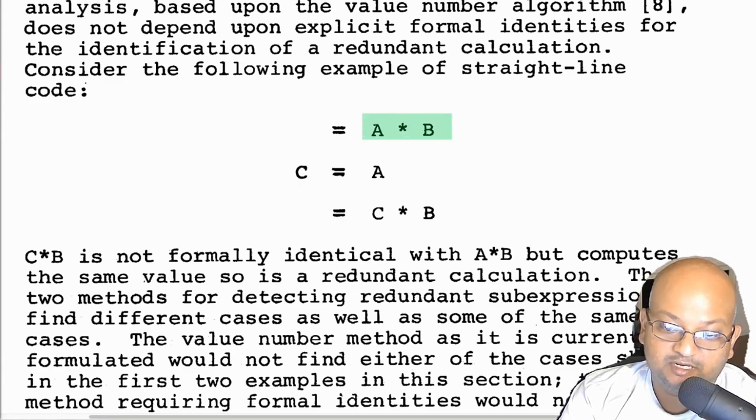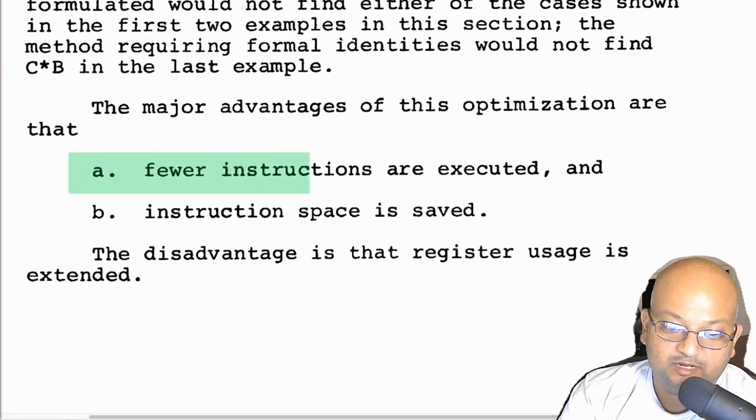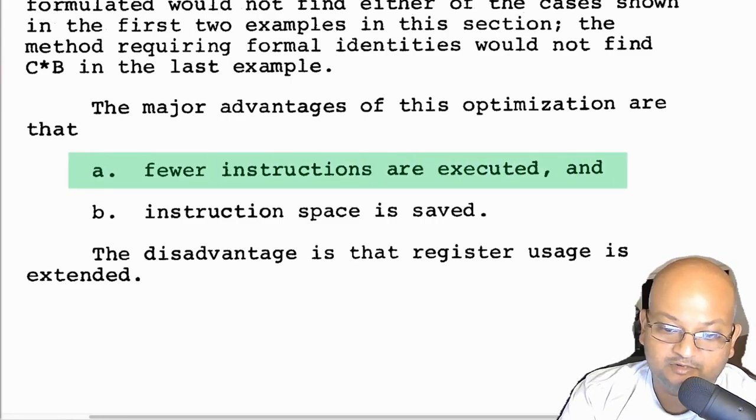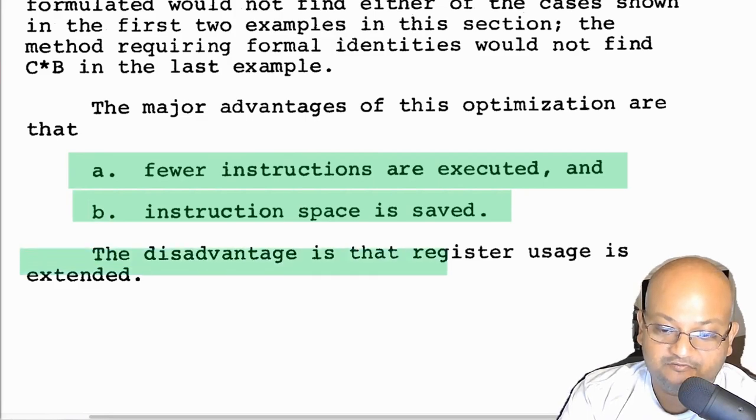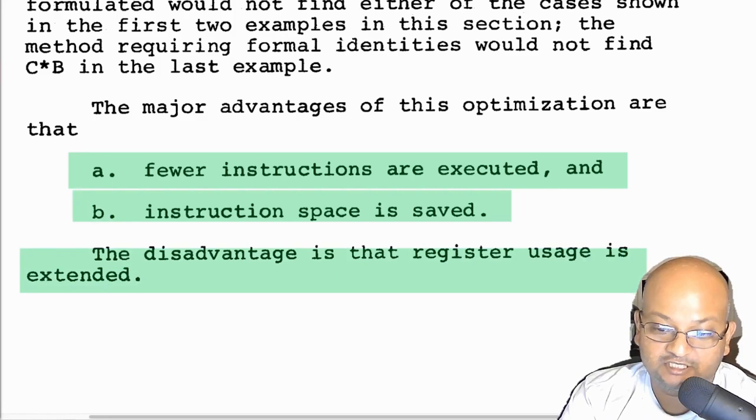You can also do a stronger form of subexpression elimination in which you propagate equivalent values. For example, we're computing A into B over here, and now that we're assigning C to be equal to A, this next expression is redundant as well. So of course, this is a net win because you're executing fewer instructions and not performing redundant calculations. You're also saving on code size. The only disadvantage of doing it is that you're increasing pressure on your registers.